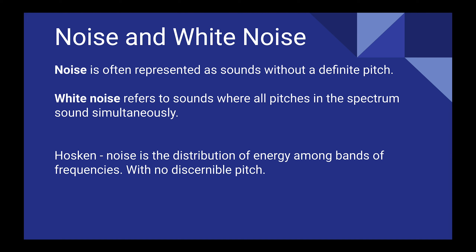Noise and white noise. Noise is often represented as sounds without a definite pitch — for example, drums, which often aren't really tuned. White noise refers to sounds where all pitches of the spectrum sound simultaneously. From the book, Hoskin refers to noise as the distribution of energy among all frequency bands with no discernible pitch. There are also other types of noise — pink noise and brown noise — which are filtered differently to emphasize certain frequency ranges.